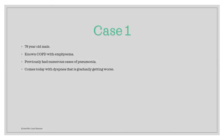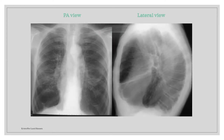For our first case, we have a 70-year-old male. He has a known diagnosis of COPD with emphysema, and he has suffered from pneumonia many times before. Today he presents with dyspnea that has gotten gradually worse. These x-rays were taken — pause the video and take some time to evaluate.